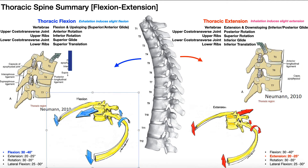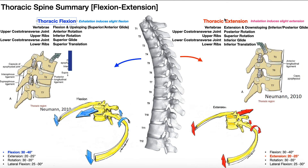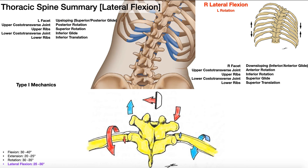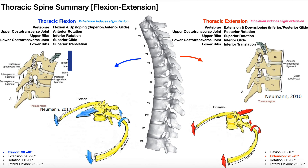In this video, we're going to be focusing more on movements of the ribs with both thoracic flexion and thoracic extension. In the next video, we'll be looking at lateral flexion and rotation, but we'll see similar patterns there.